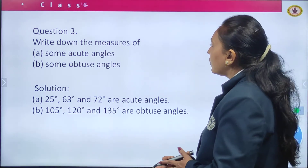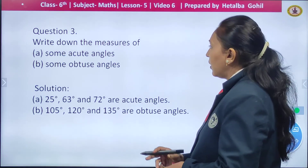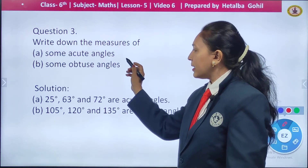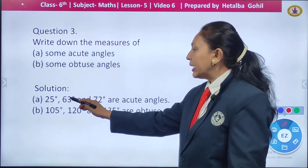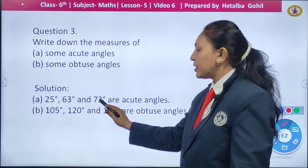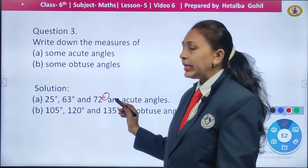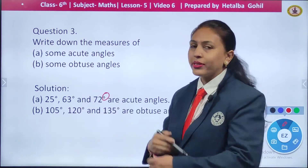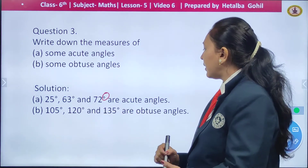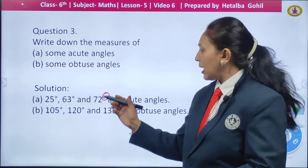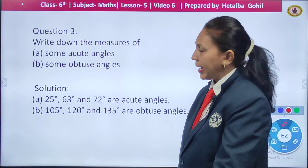Question number 3: write down the measures of some acute angles and some obtuse angles. Acute angles are less than 90 degrees, so you can take any number less than 90. I have taken 25 degrees, 63 degrees, and 72 degrees — do not forget to write the degree symbol, as angles are measured in degrees. Similarly, obtuse angles are more than 90 degrees: for example, 105 degrees, 120 degrees, and 135 degrees.